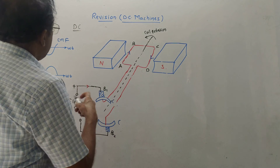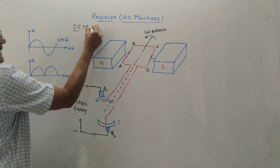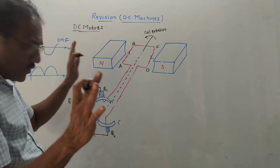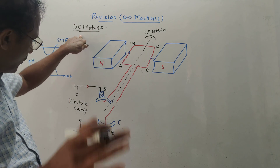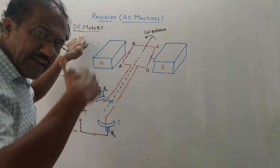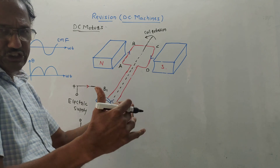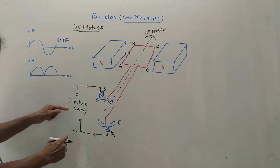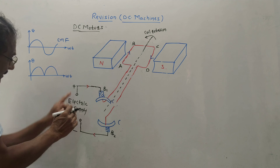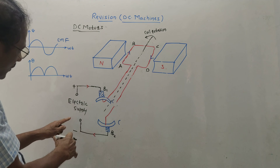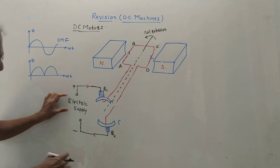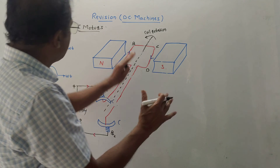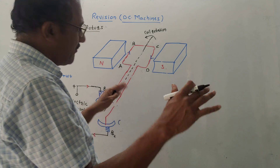Next is DC motors. It is very much similar to the DC generator. The function of DC motor is to convert electrical signal into mechanical signal — that means accept electrical energy and convert it into rotational mechanical energy. Here I have connected electric supply instead of a load. The remaining diagram and construction is the same as that of the DC generator.